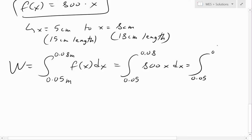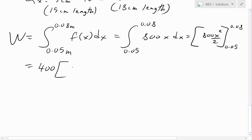This equals, take the integral of this, 800 x squared divided by 2, from 0.05 to 0.08. This equals, 800 divided by 2 is 400, so 400, we can take that out as a constant. Now plug these in, so we get 0.08 squared minus 0.05 squared.